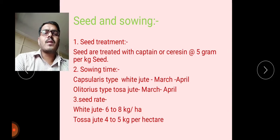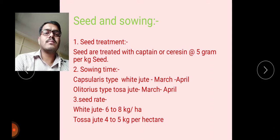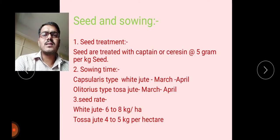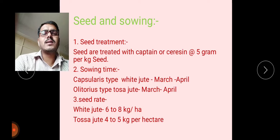Seed rate: for white jute, 6 to 8 kg of seed is required per hectare. For tosa jute, only 4 to 5 kg per hectare is required. Tosa jute seeds are smaller in size, so the test weight is lower and seed rate is lower, while white jute has a higher test weight.